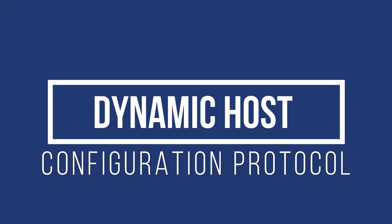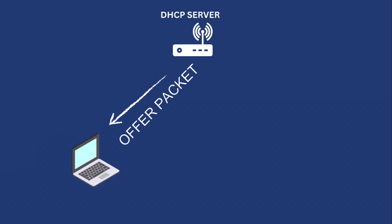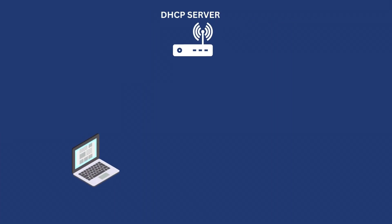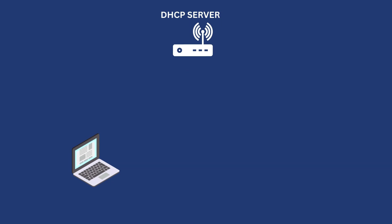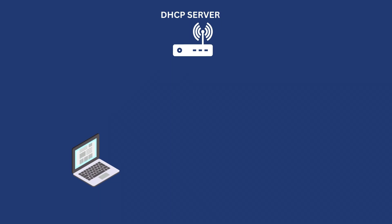DHCP stands for Dynamic Host Configuration Protocol. Whenever a new device joins a network, it sends a broadcast request. When the DHCP server receives this request, it sends a DHCP offer packet. This packet contains a proposed IP for the client. Upon receiving the offer, the client sends another packet called a DHCP request message, asking the server to finalize the IP assignment. The server then sends an acknowledgement stating that the request has been granted and the client can use the IP address for a certain period of time. This time is called lease time.